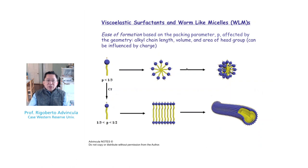Why does a viscoelastic surfactant form? First, higher concentration forces micelles not just into spherical vesicles but into elongated cylinders and worm-like micelles. However, there is also the role of the critical packing parameter. A critical packing parameter less than one-third keeps micelles spherical, whereas a value between one-third and one-half enables formation of cylindrical micelles. Hence, not all surfactants are capable of forming viscoelastic surfactants.